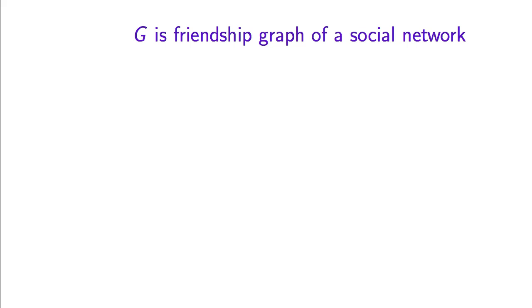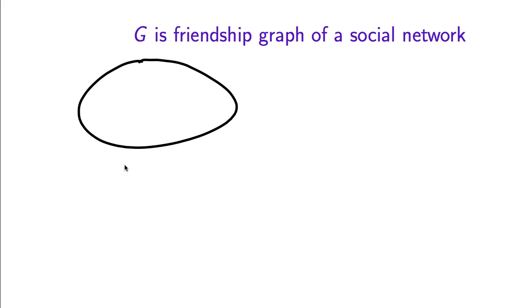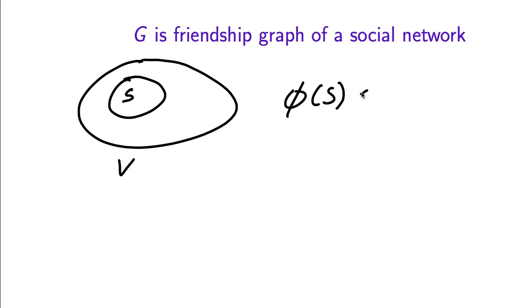Suppose that our undirected graph is the friendship graph of a social network — all the users of the social network, with edge connections corresponding to friendships. Suppose we find some set of vertices whose conductance is very small, say less than 0.01. What this means is that if we look at the average user in S, 99% of their friend relationships are with other users in S.